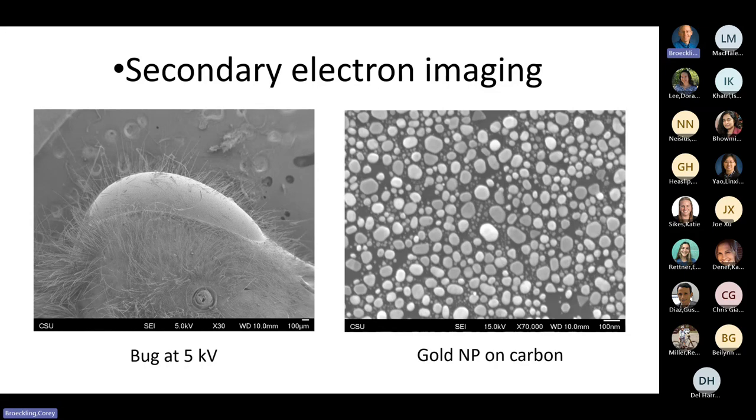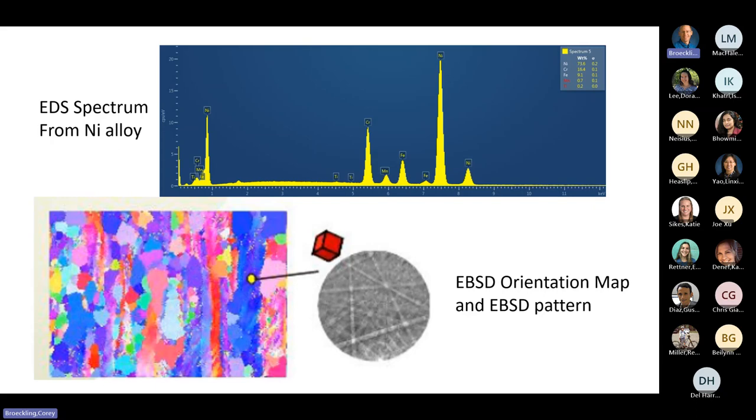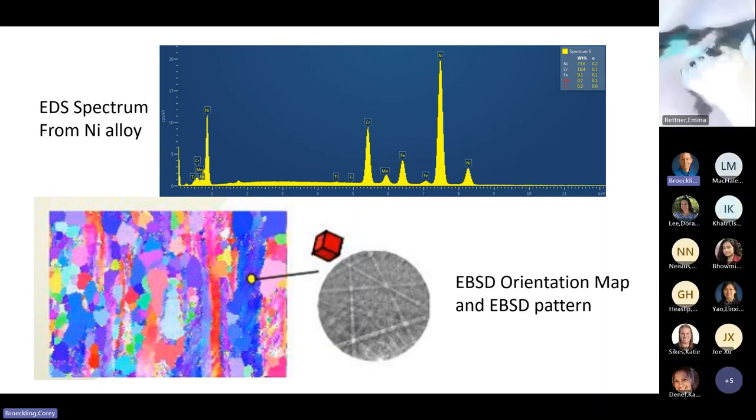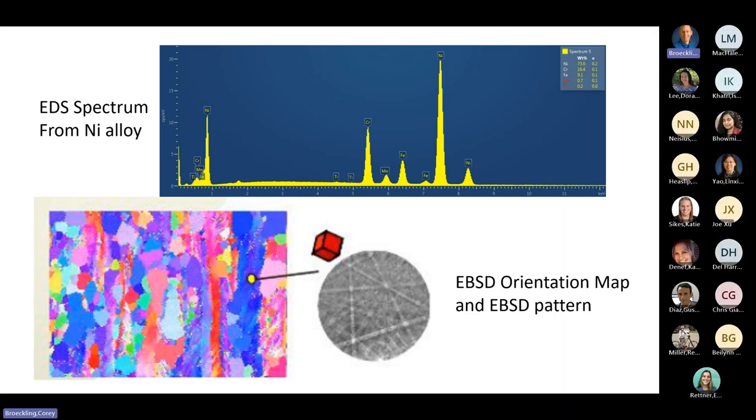We can do EDS spectra. It basically does the elements from beryllium up to uranium. The big problem is people take those numbers of quantification, they believe that because the computer spits it out, it's good. And it's not. But if you think you have strong, medium, weak, and very weak, and you're happy with that level of concentration, then you're pretty satisfied.